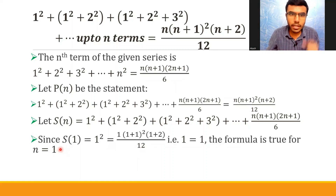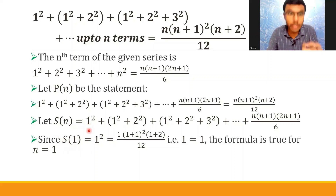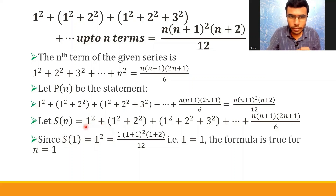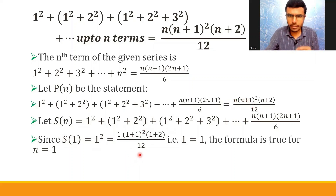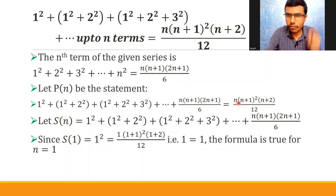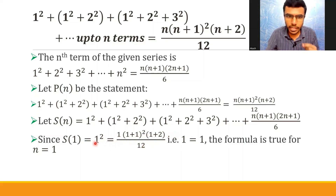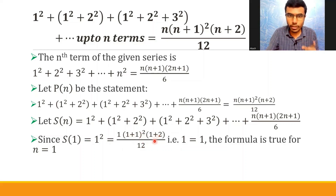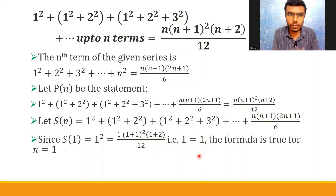First, I'm showing that the given statement is true for n = 1. S(1) is nothing but the first term of the series, which is 1². Now, checking whether LHS equals RHS: LHS is 1² = 1. For RHS, put n = 1: you get 1 × (1+1)² × (1+2) / 12 = 1 × 4 × 3 / 12 = 12/12 = 1. So 1 = 1. Therefore, the formula is true for n = 1.